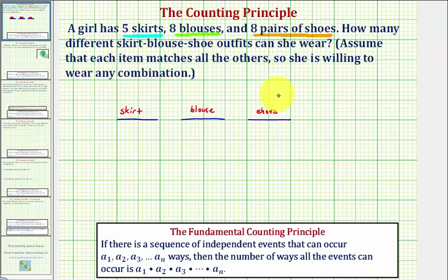The total number of outfits will be equal to the product of the number of ways of selecting each of these items. Because there are five skirts, there are five ways to select the skirt, times the number of ways of selecting the blouse. Because there are eight blouses, there are eight ways to select the blouse. And finally, the number of ways of selecting the shoes, considering eight pairs of shoes, is eight.